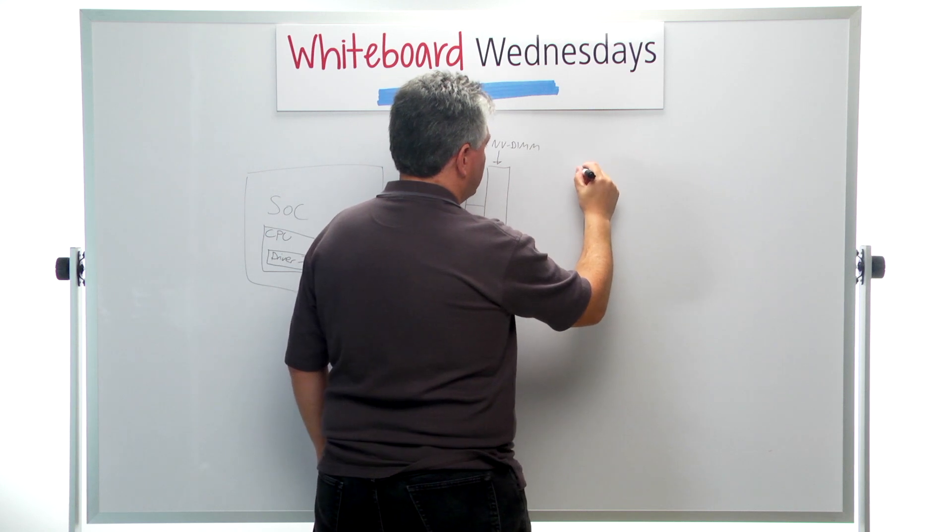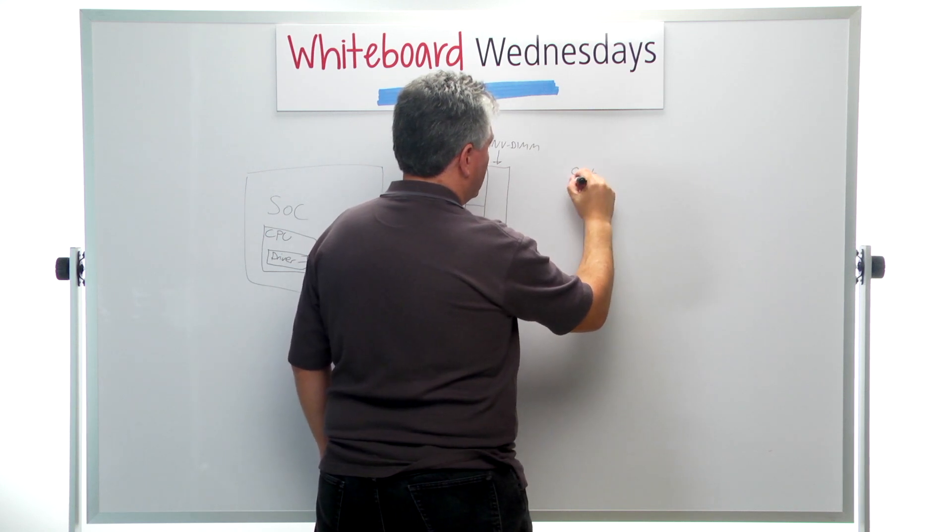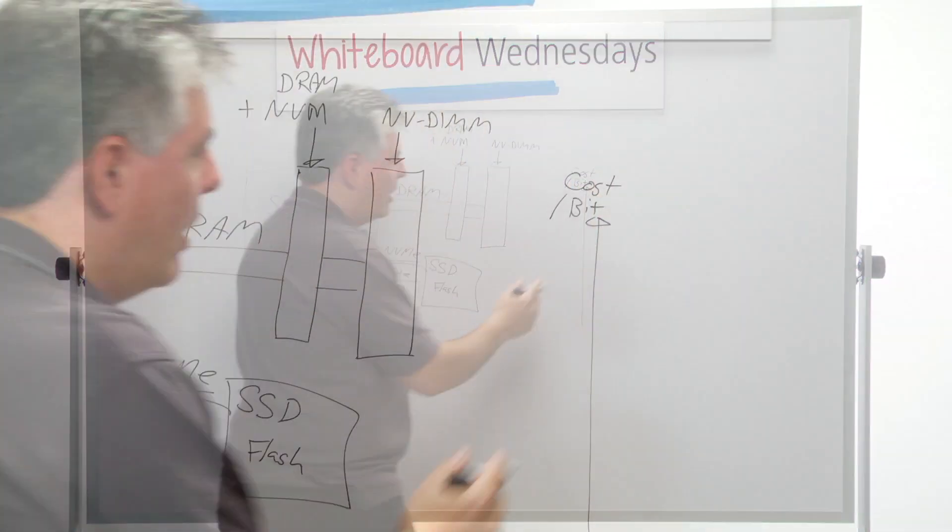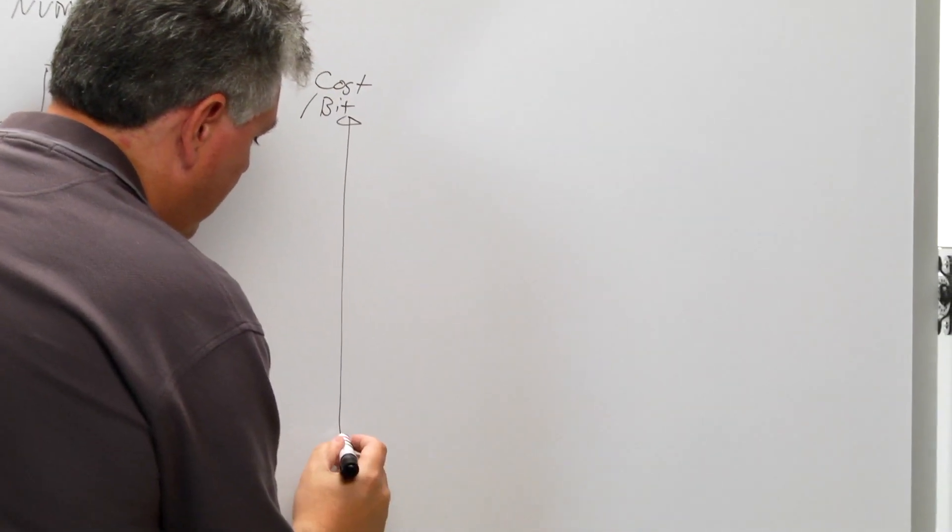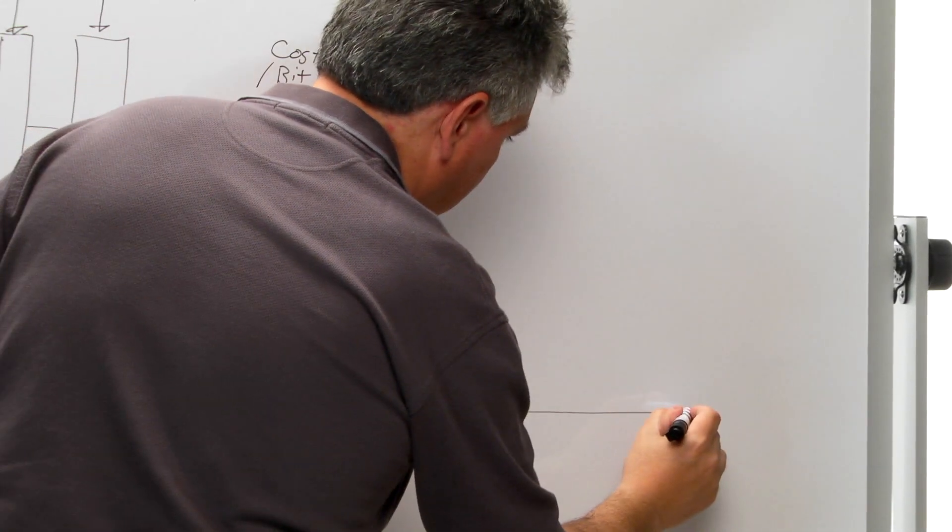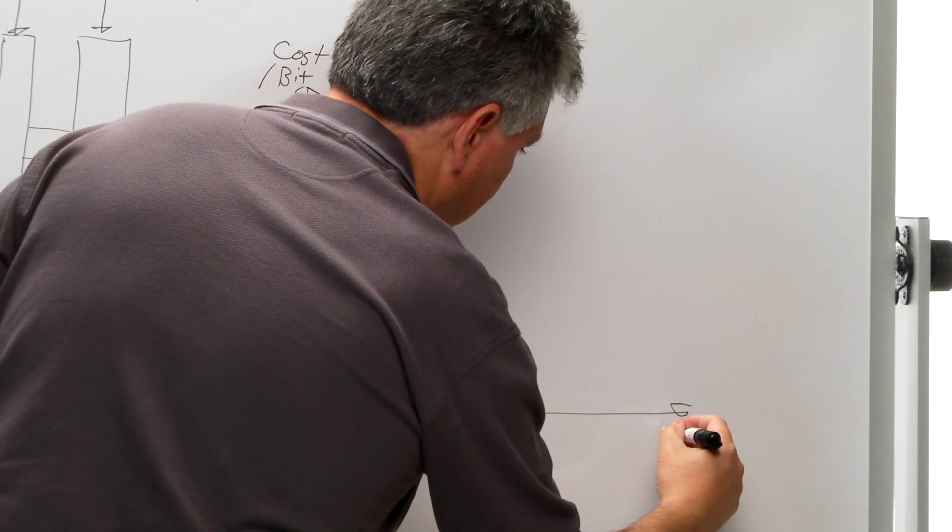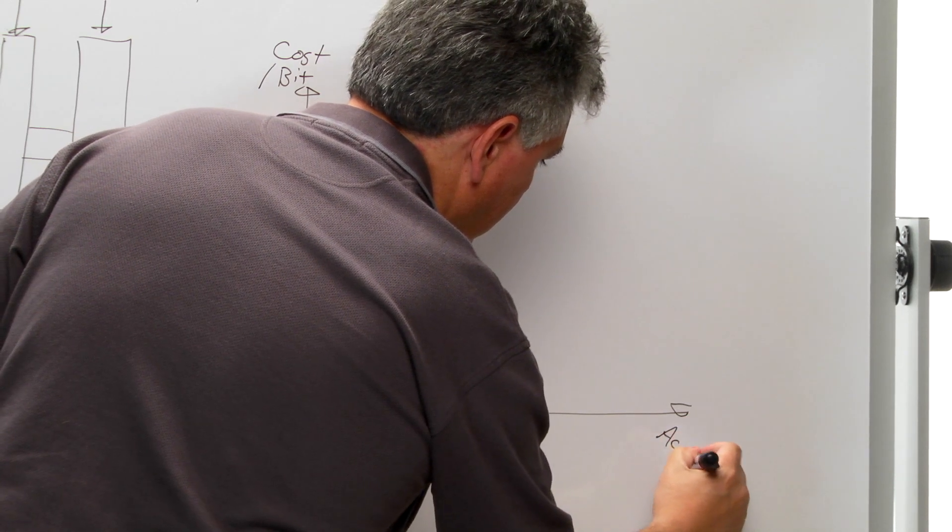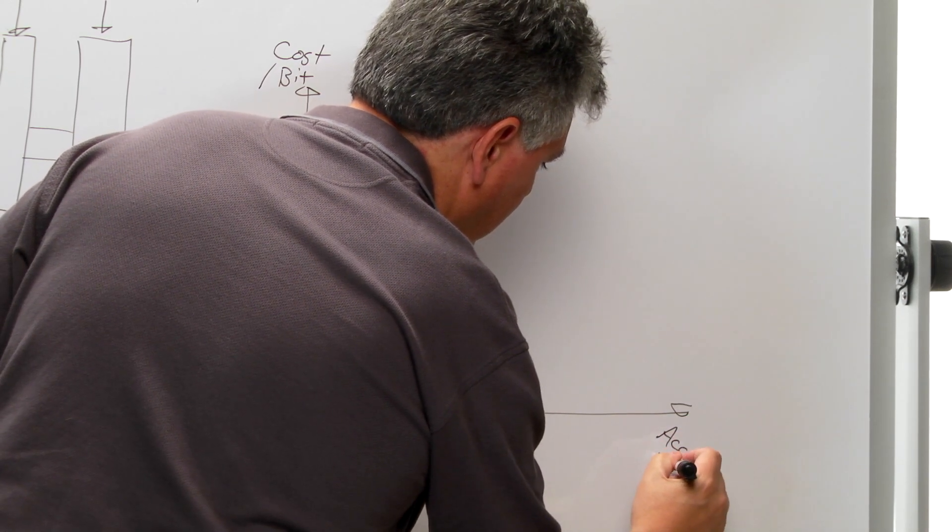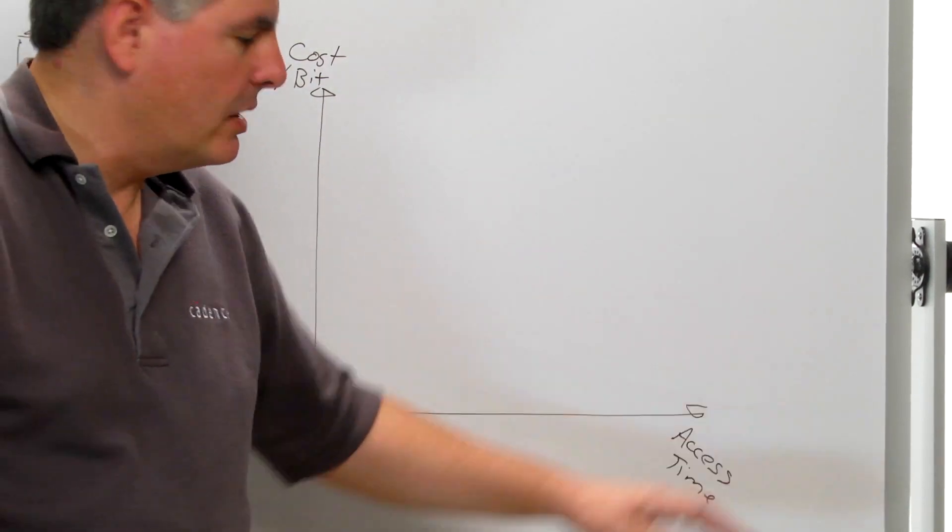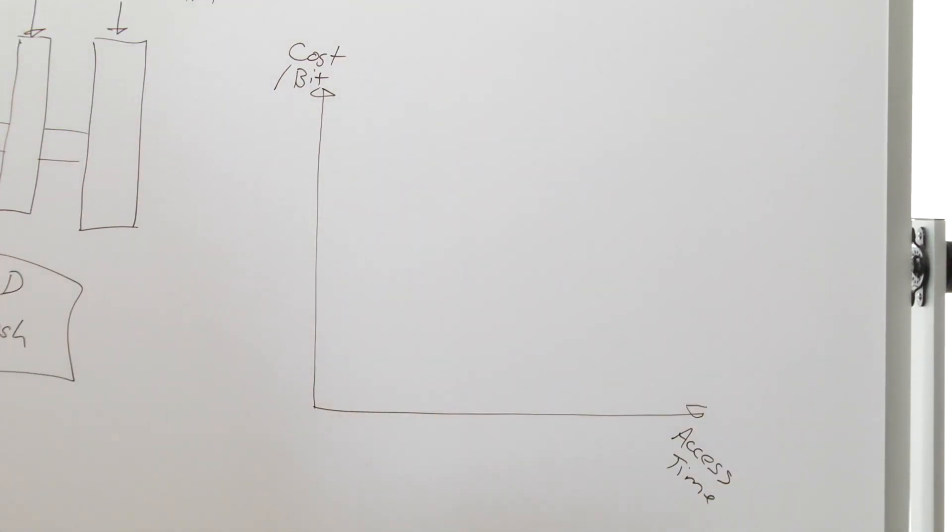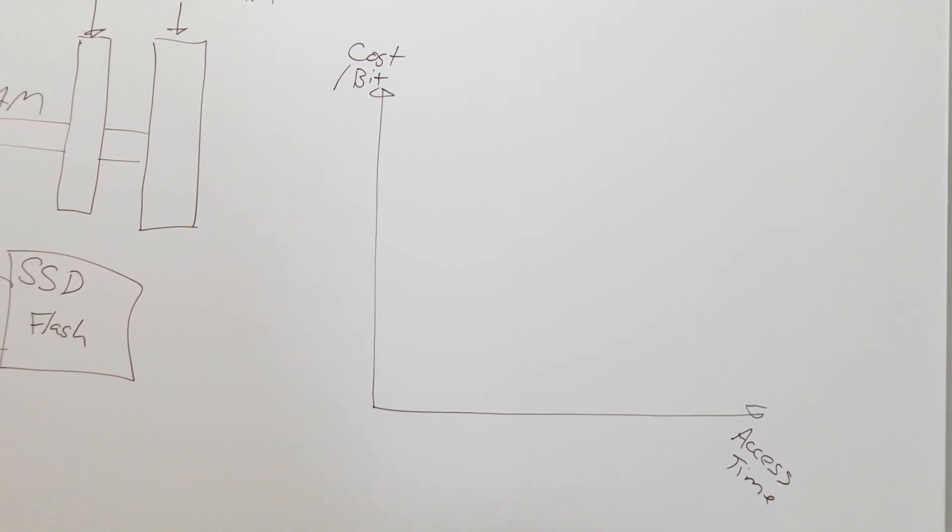And we'll put access time on our other axis here. And we may also consider on this other axis, we may also consider bandwidth or something like that.